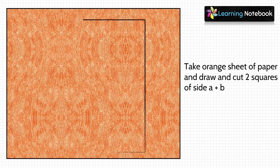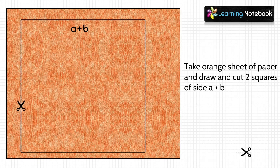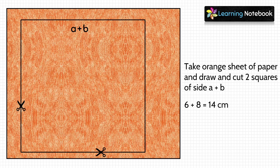Now let's take one orange colored sheet and draw two squares on it of side a + b, that is 6 + 8 = 14 centimeters, and then cut out both these squares.